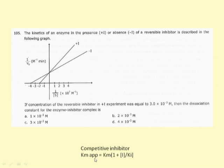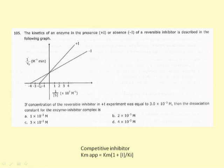Km apparent is the original Km multiplied by (1 + i/Ki). Using the equation with Km = 1/4 from the graph, Km apparent = 1/2 from the graph, and i given in the question, the only unknown remaining is Ki. Substituting all parameters from the data allows calculation of Ki. The graphical data provides the numerical values of Km needed for this calculation.